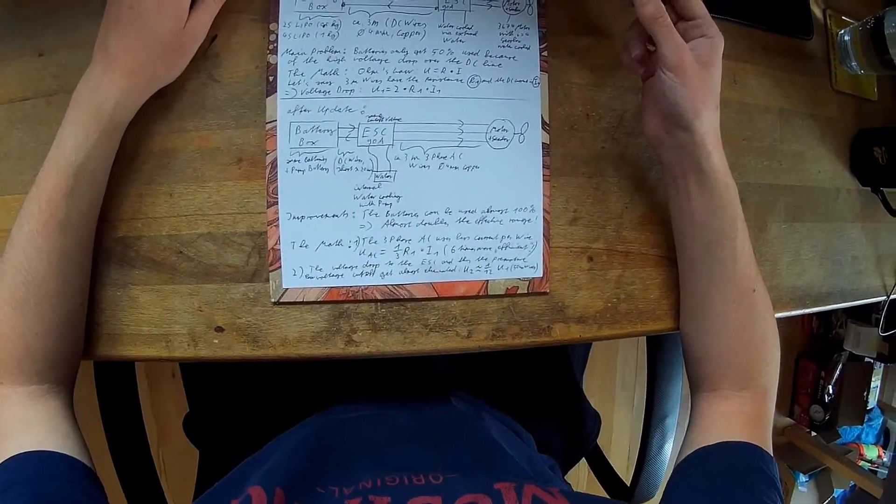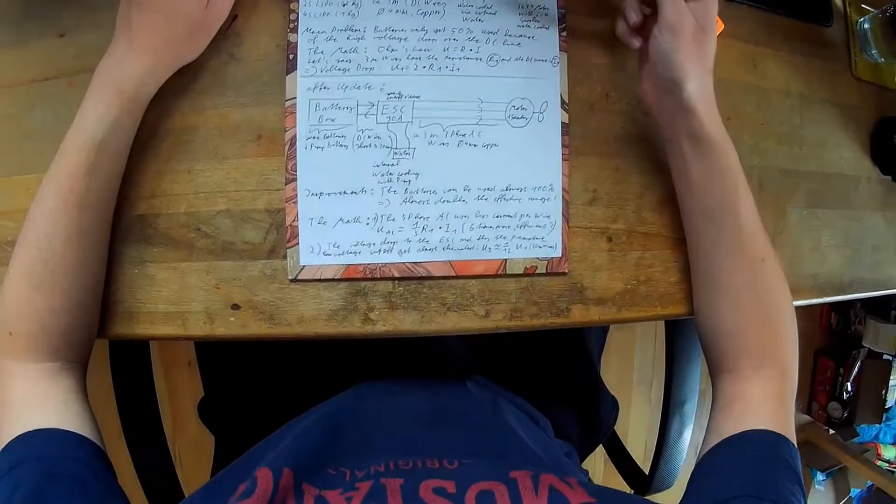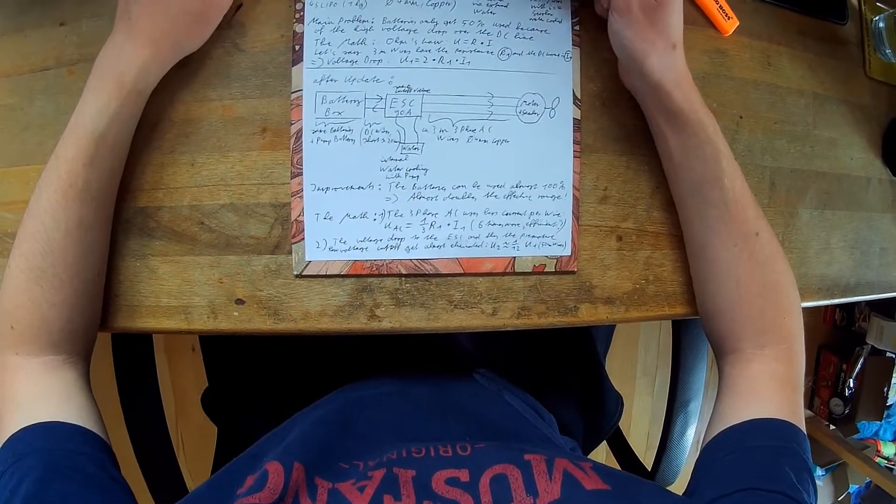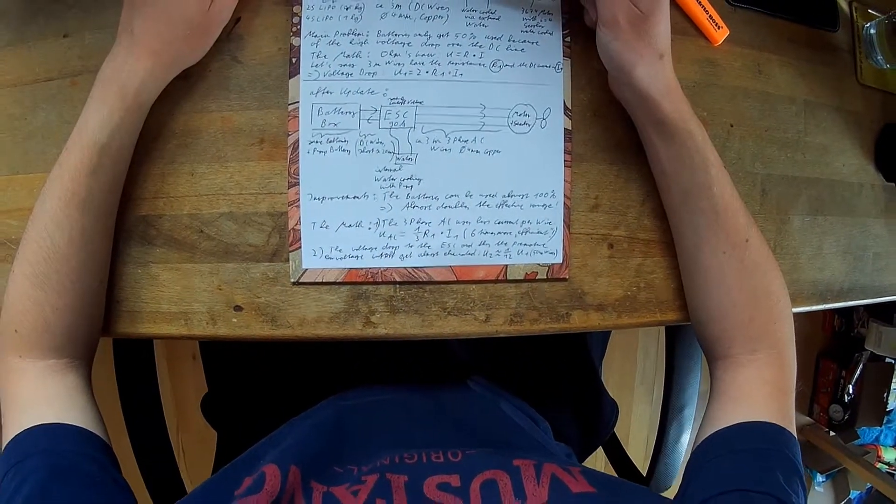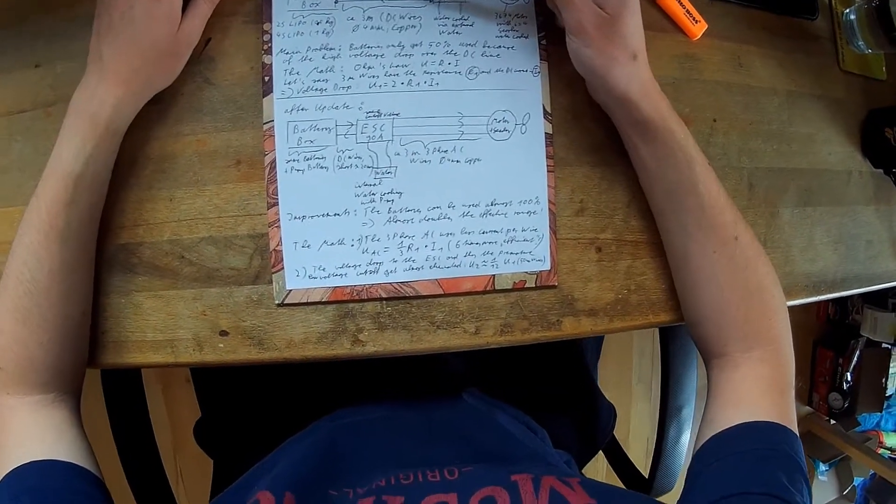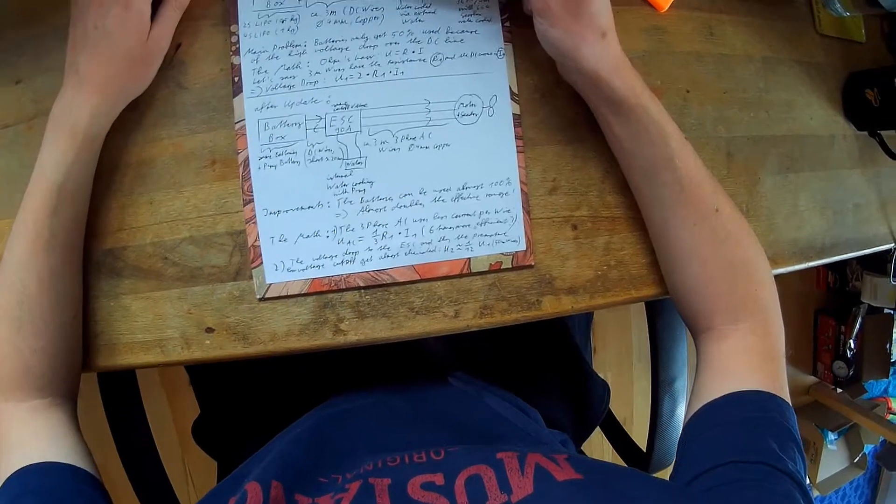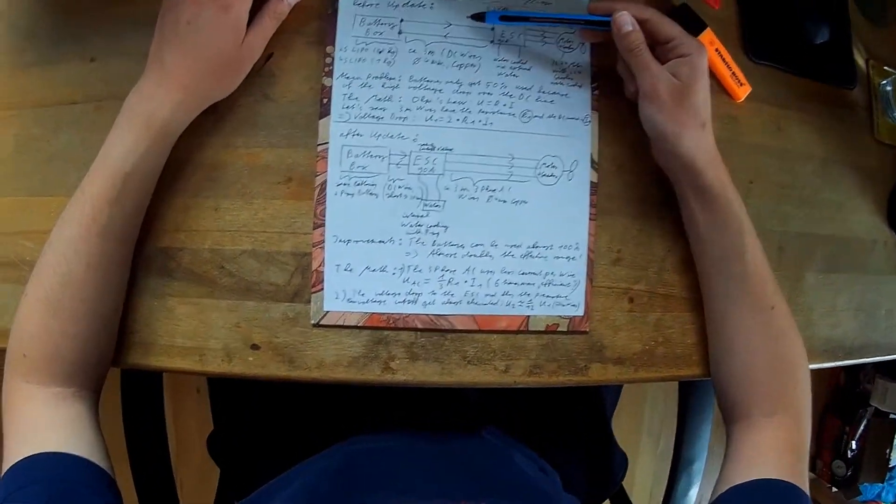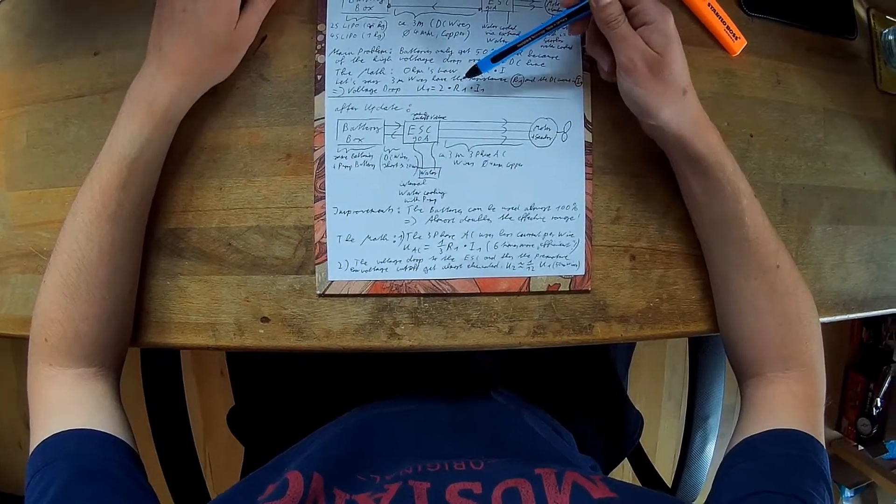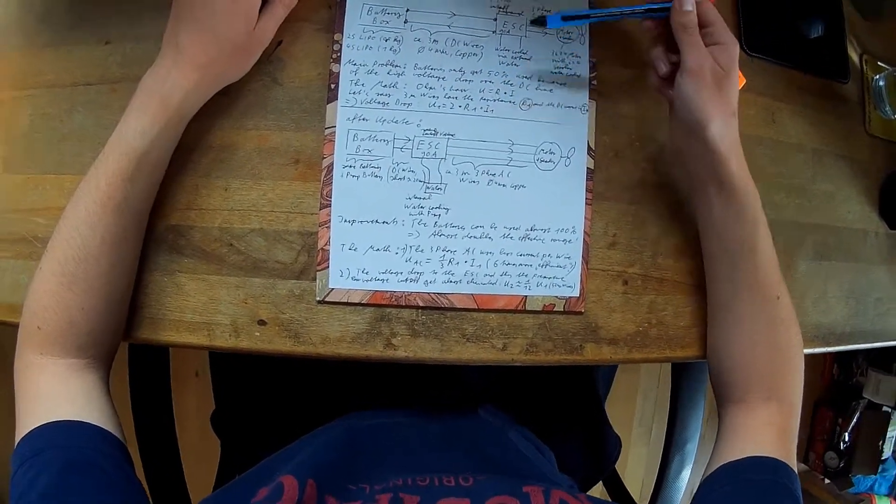And I actually did some math. If you say that this 3m wire is equivalent to the resistance R1 and that the current is equivalent to I1, then the voltage drop is 2 times R1 times I1.